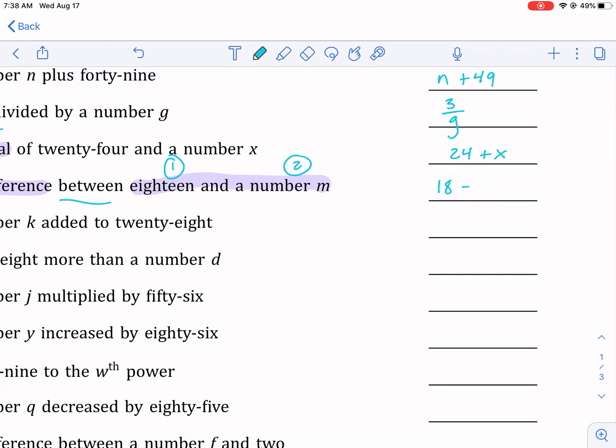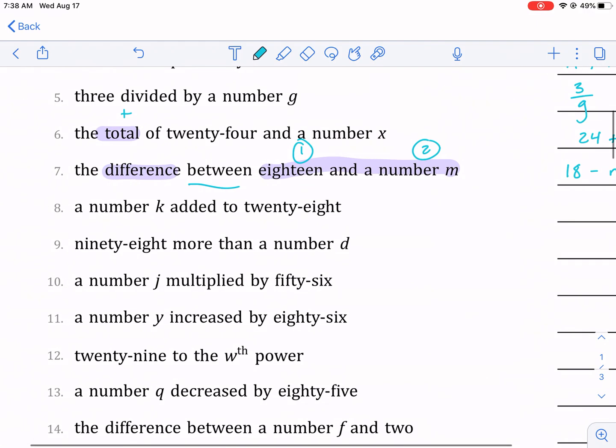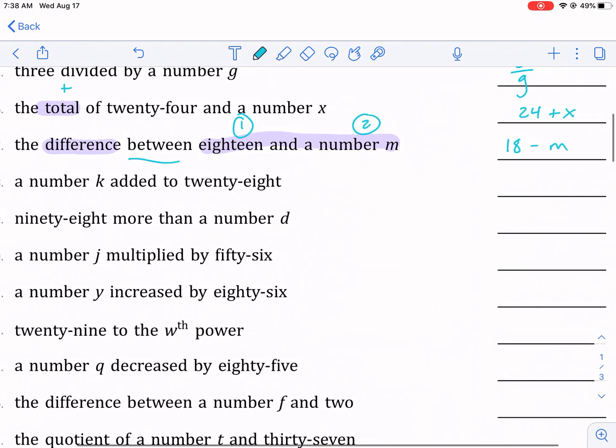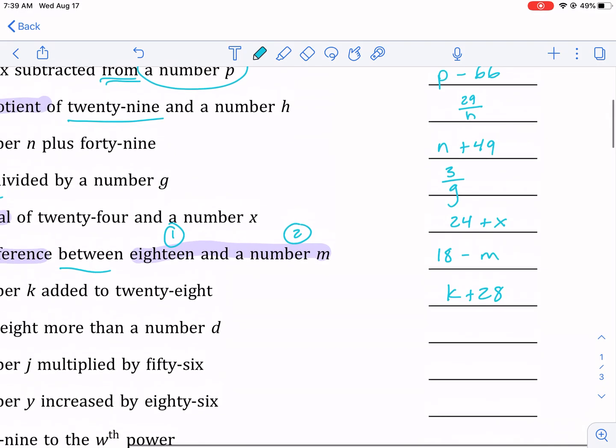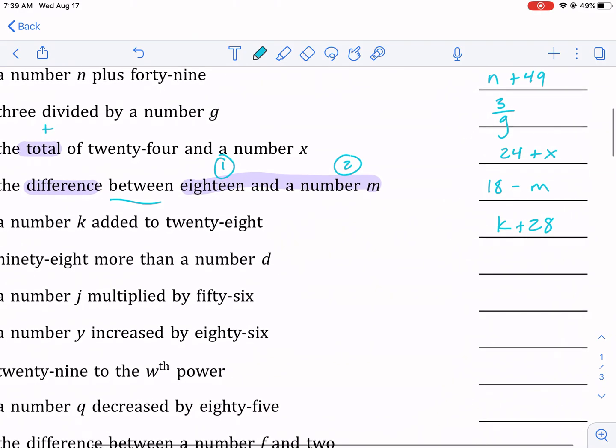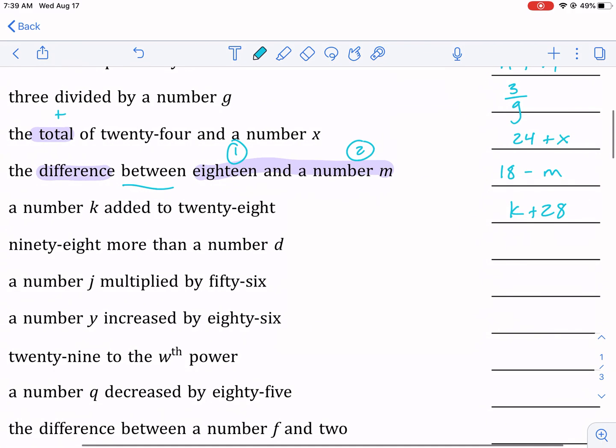A number k added to 28—it doesn't matter the order. So if you put 28 plus k, it's the same thing. With addition, it doesn't matter which order you have it in. With multiplication, same thing. You just have to be careful with subtraction and division.